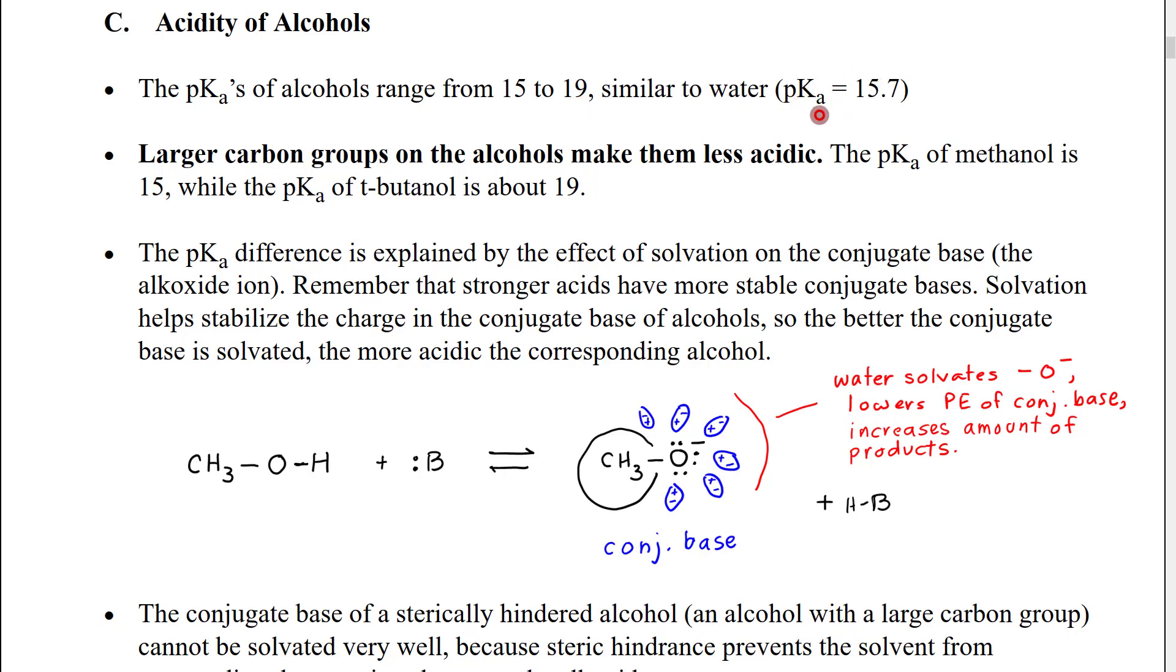15 being the stronger acids, 19 being the weaker acids. This is the same range that we see for water, which has a pKa of 15.7. And in a sense, you could almost argue that water is like an alcohol, just with no carbon groups attached.